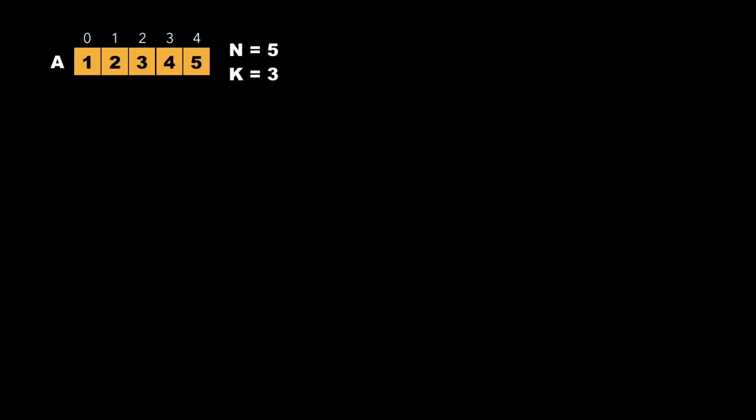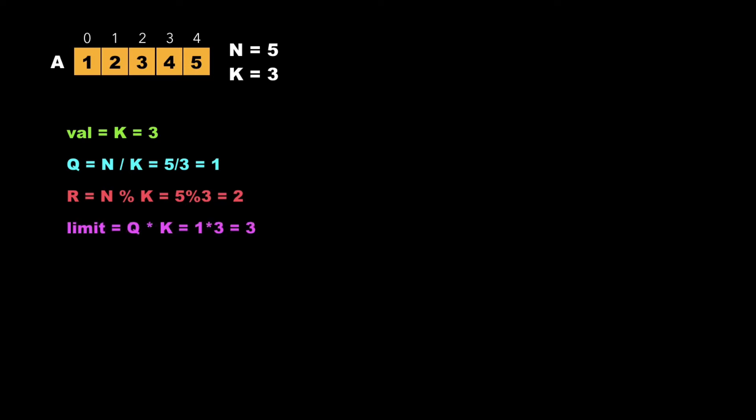Now let's look at the approach to solve this problem. We consider the same example where n=5 and k=3, and the array elements are 1, 2, 3, 4, 5. We declare variables val and initial as equal to k. We calculate quotient q as n divided by k, which is 1, and remainder r as n mod k, which is 2. The quotient represents the number of subgroups of size k, the remainder represents the last remaining subgroup whose size is not equal to k. We also calculate limit as q times k, which equals 3 — the boundary of the fully-sized subgroups.